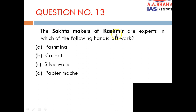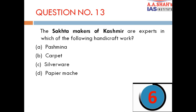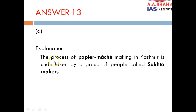Question 13: The Sakht makers of Kashmir are experts in which of the following handicraft work? A. Pashmina, B. Carpet, C. Silverware, D. Paper mache. The correct answer is D — paper mache. The process of paper mache making is famous from Kashmir, and it is undertaken by a group of people called Sakht makers.